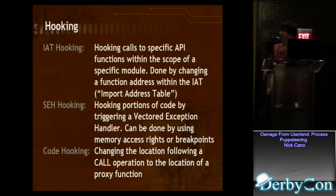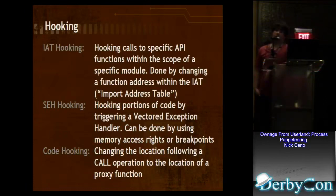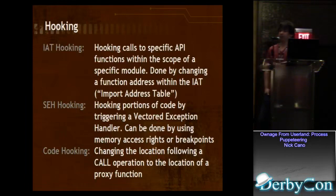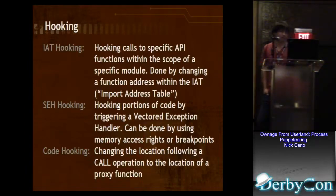IAT hooking lets you hook calls to specific API functions within the scope of a specific module. You do this by changing the function address in the import address table — a table in the PE header that lists what DLLs it uses and what functions it calls. You replace the address put there at runtime when the process starts with your own address. It's not too effective though if the process knows you're going to do this, because the process might store this in its own table that you don't know about, so your function will never get hit. Be careful about that.